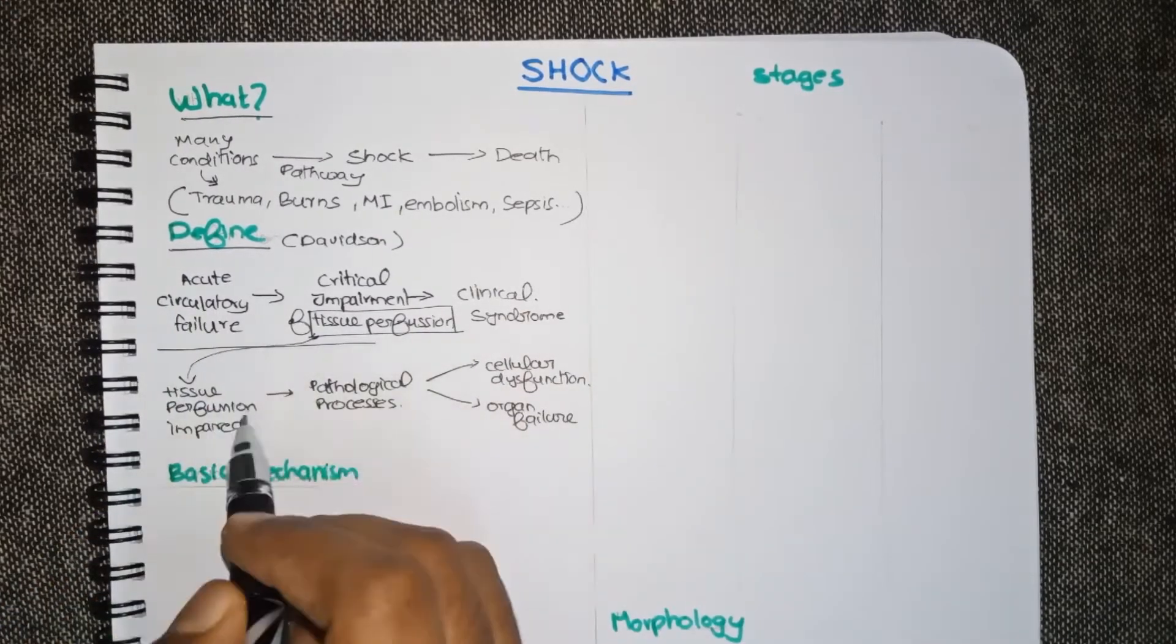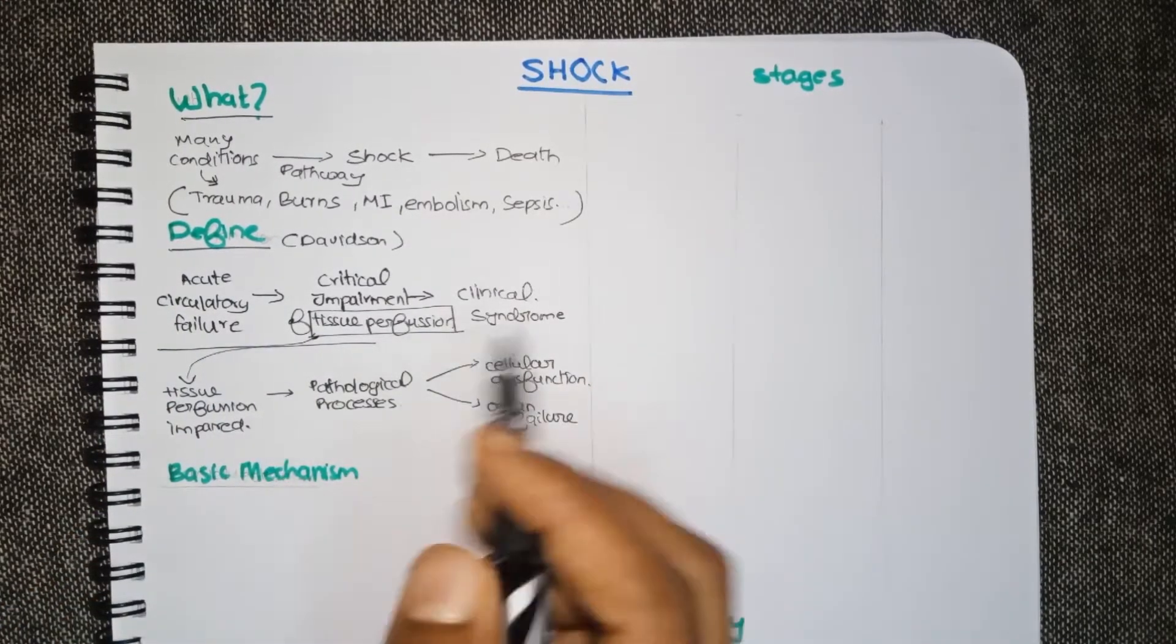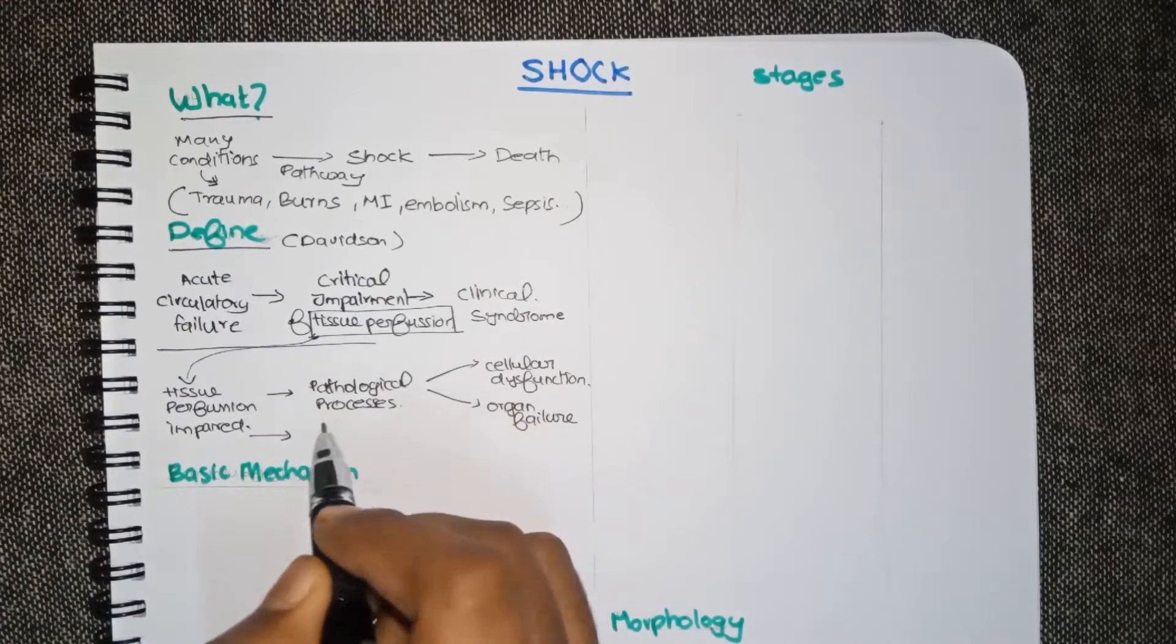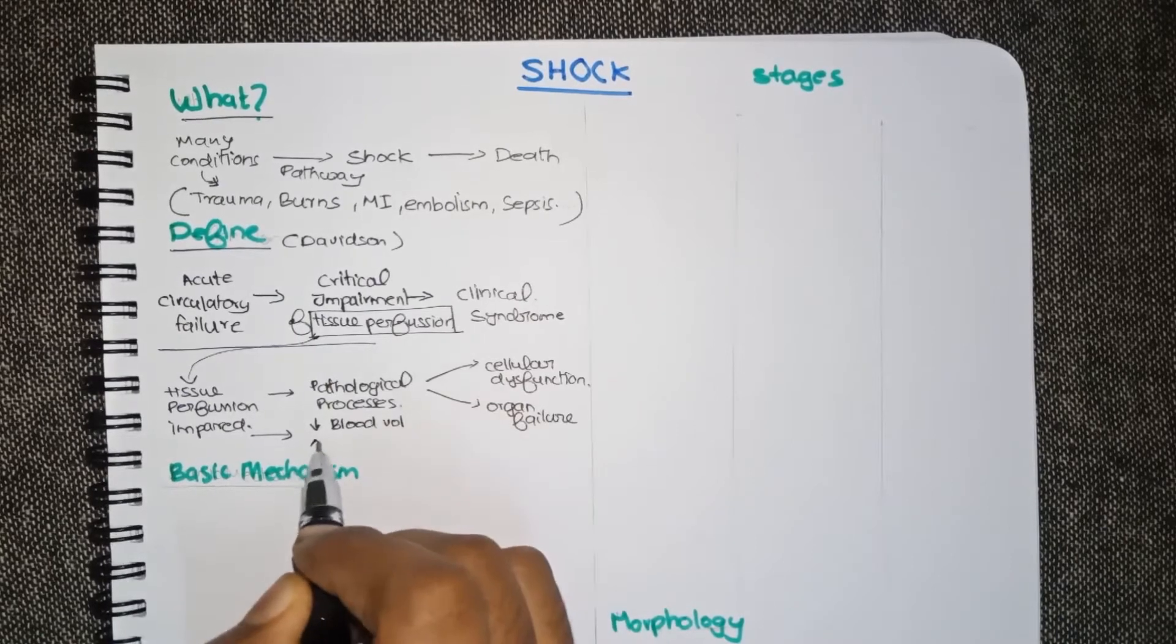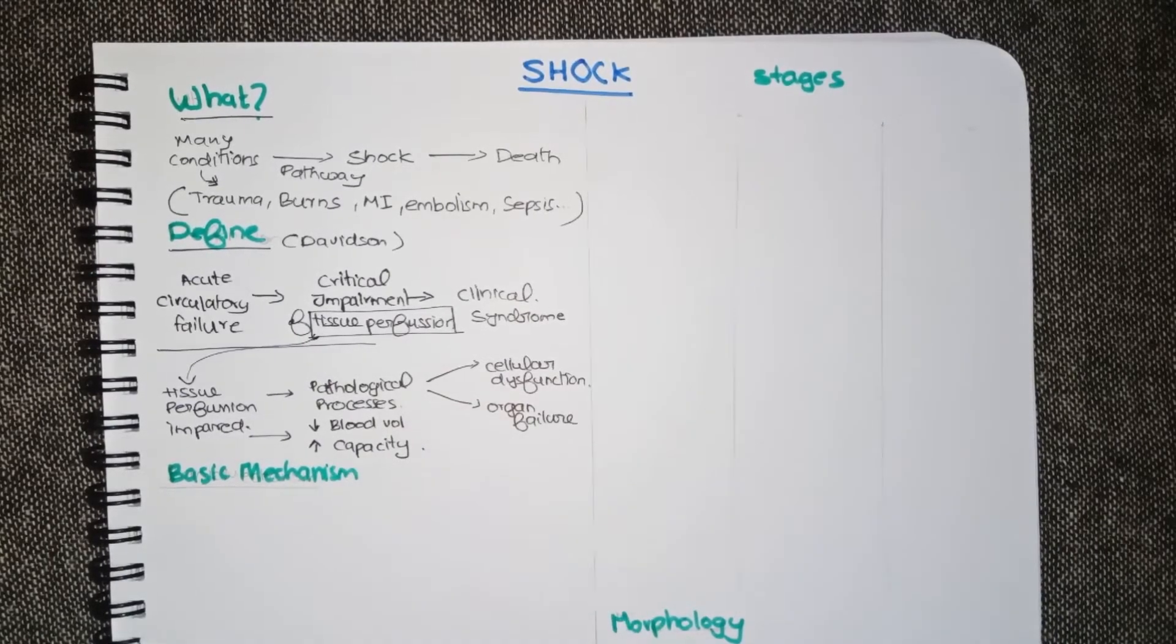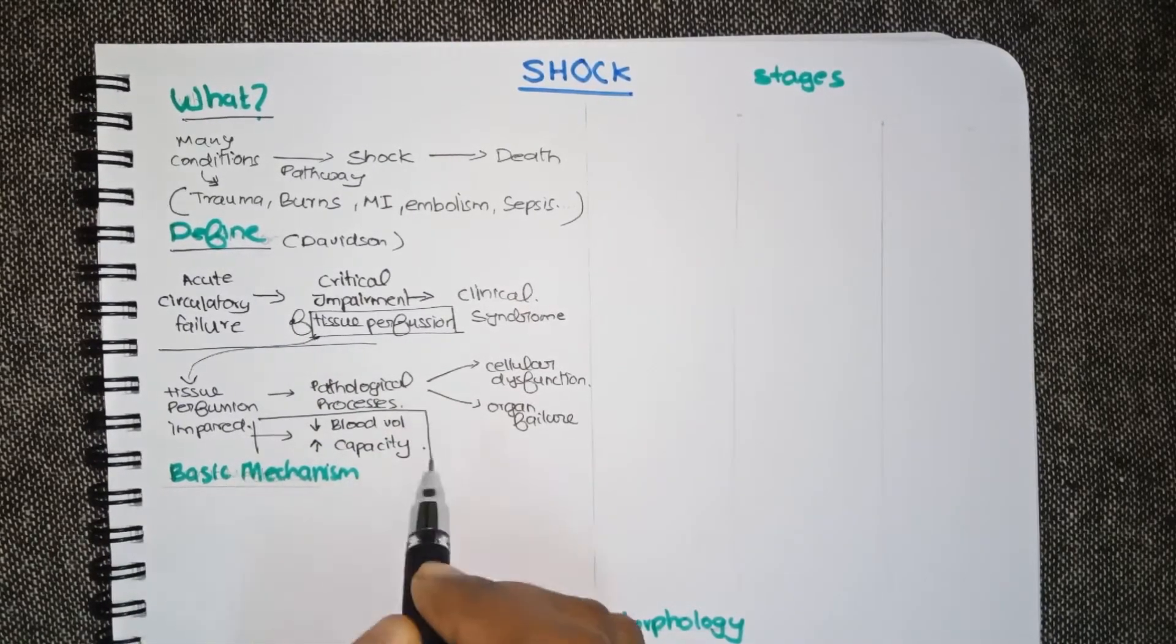Now we should know why there is impaired tissue perfusion. It is mainly due to either decrease in the amount of blood or increase in the overall capacity of the circulatory system.